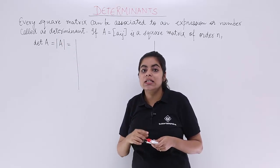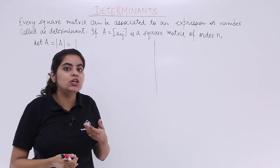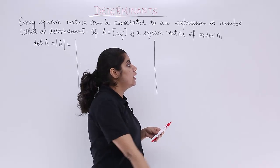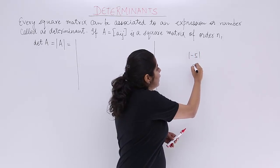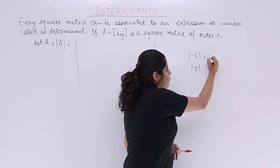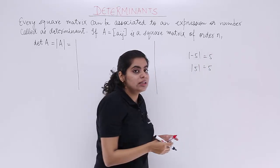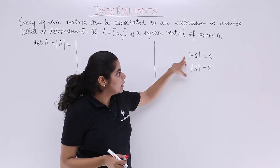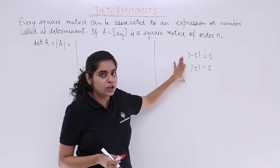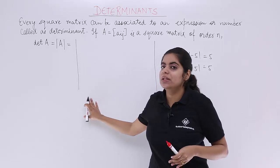Mind it that these two parallel lines are used in the form of modulus also. You remember we read something called as mod of minus five, mod of five—these both have the value of five. Those are parallel lines but they are modulus, not determinant. Here they are determinant, so don't get confused.